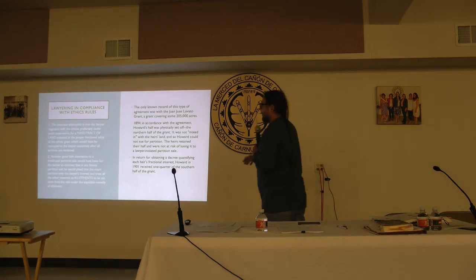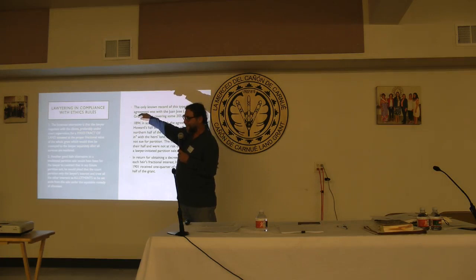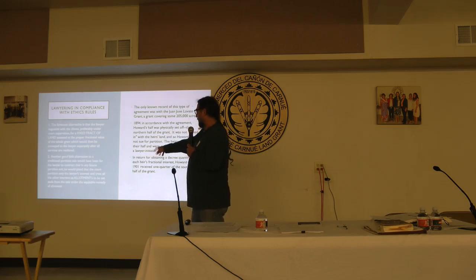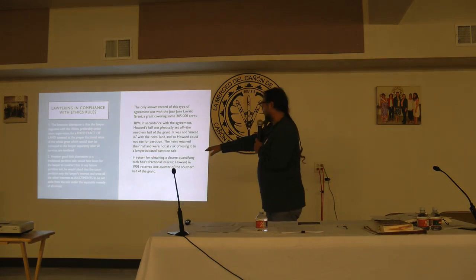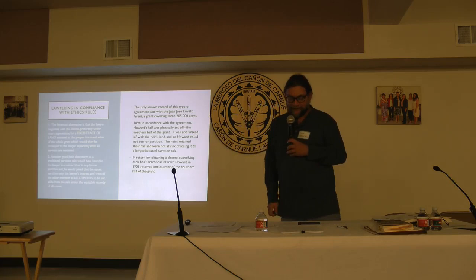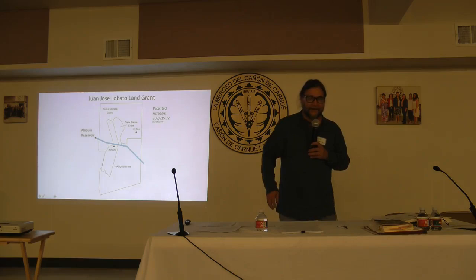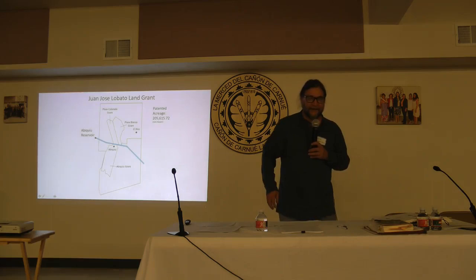To recap: how would lawyering have been done in compliance with the ethics rules? The lawyer could have negotiated with the clients for a fixed tract of land rather than an undivided fraction — which would have led to partition. Or the lawyer could have pleaded that the other interests be set aside as allotments and excluded from the sale. The only known record of the first approach being used was the Juan José Lovato grant situation.